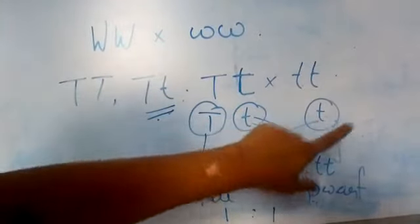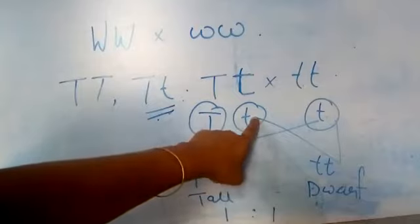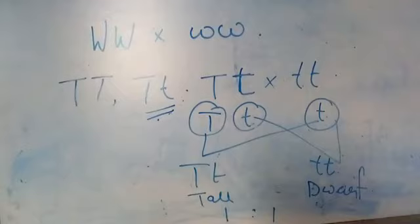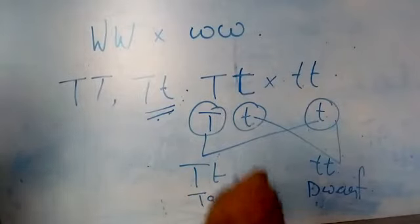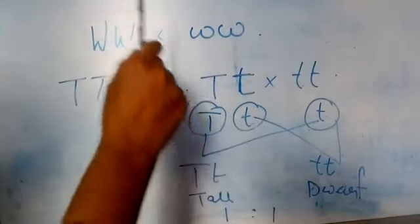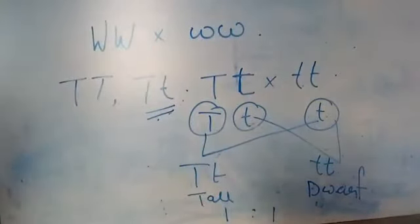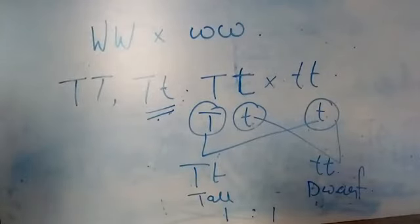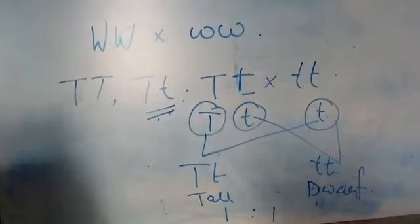If the capital T gamete fuses with small t, the genotype of the plant will be capital T small t — a tall plant. If the small t gamete fuses with small t, the genotype will be small t small t and the plant will be a dwarf plant. When you see the ratio, it is 1 is to 1. So, the test cross ratio is 1 is to 1.